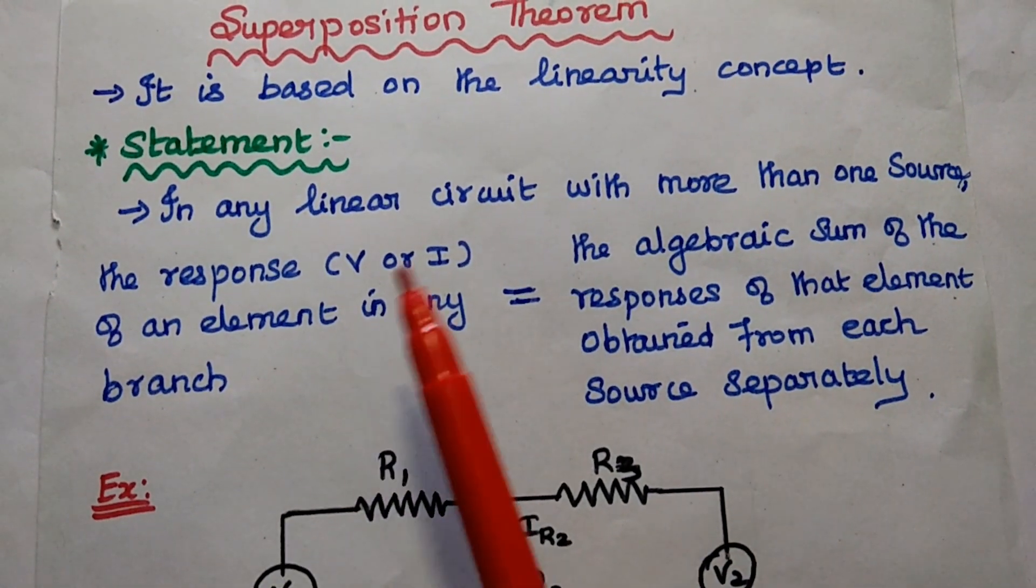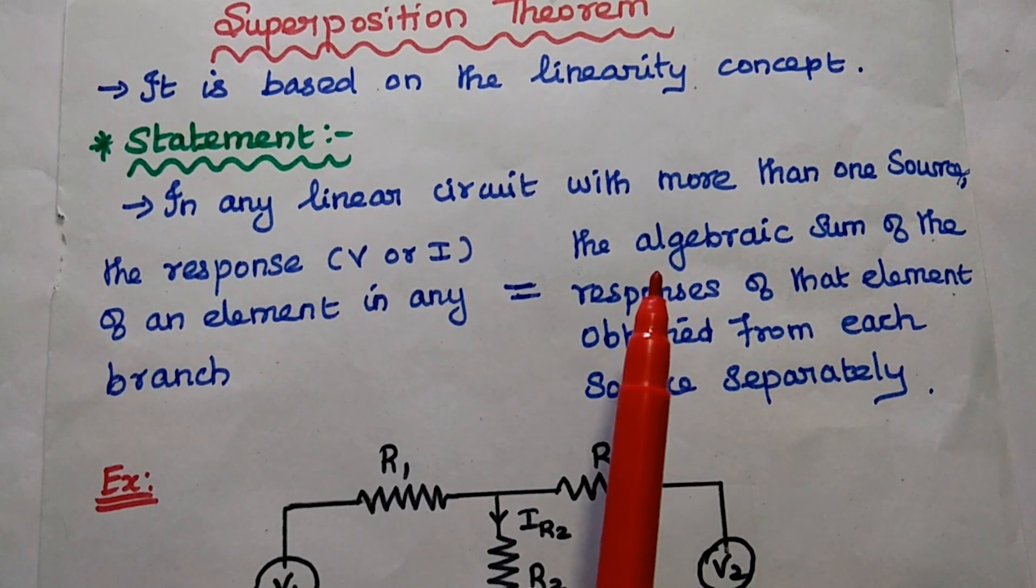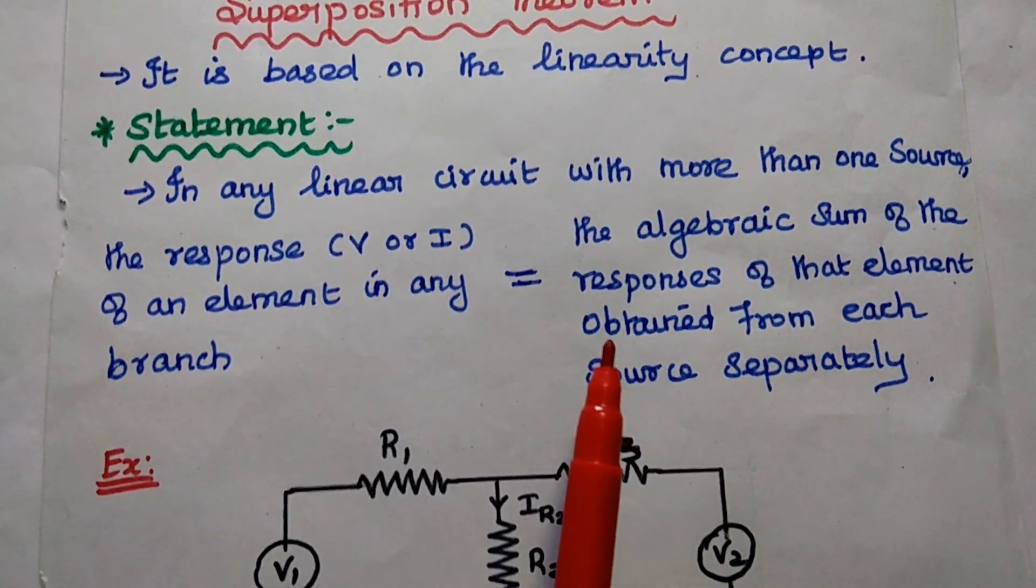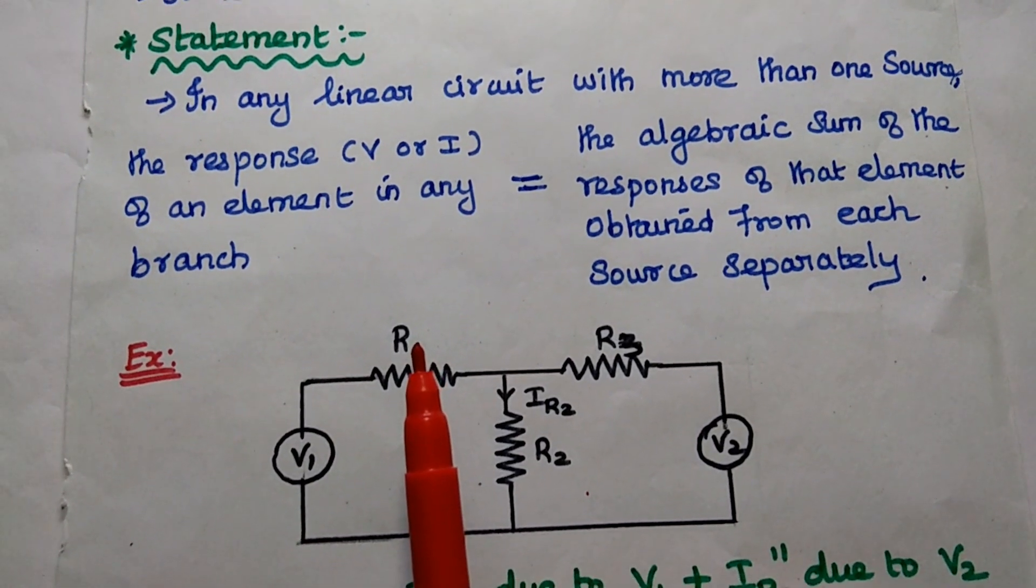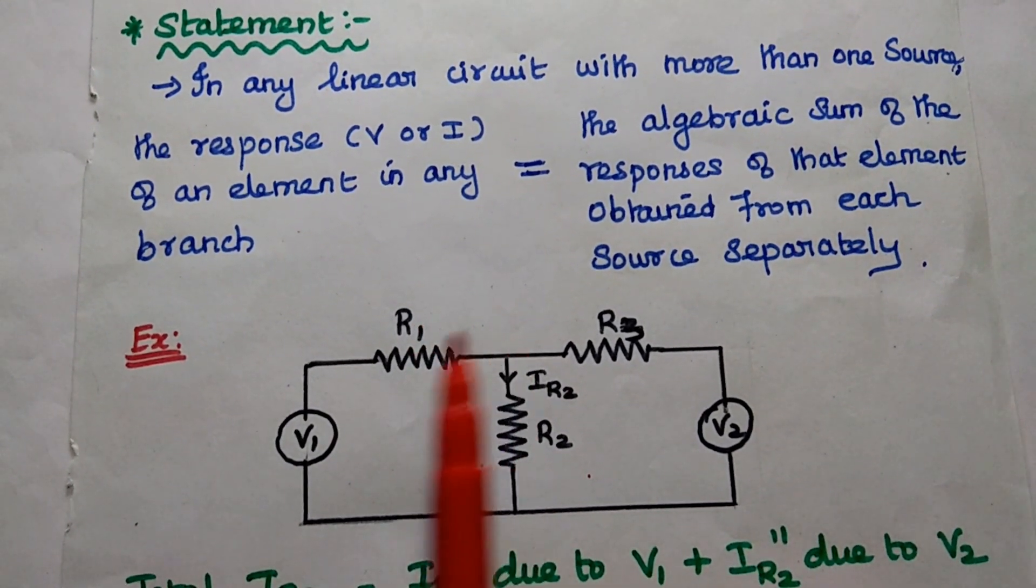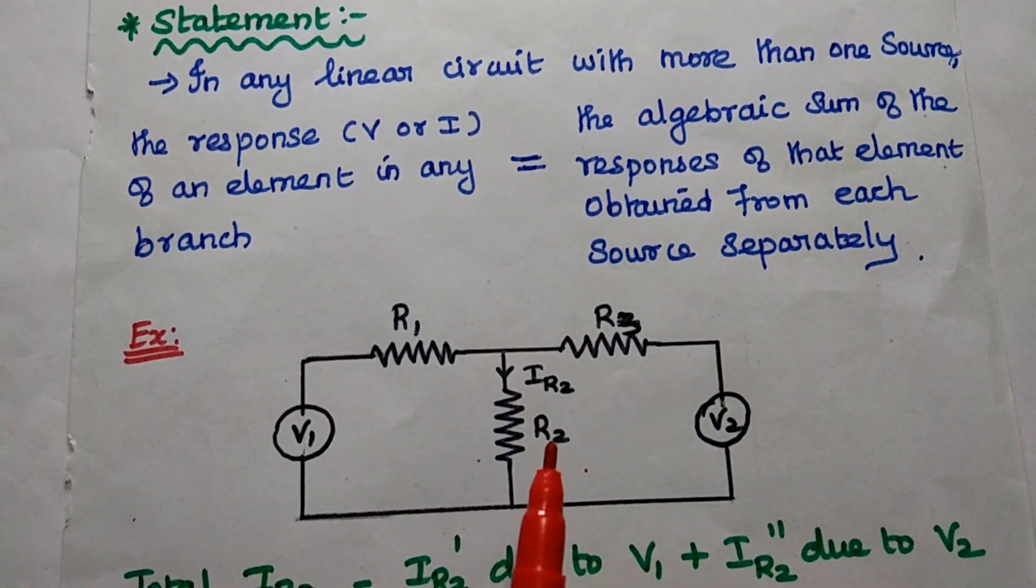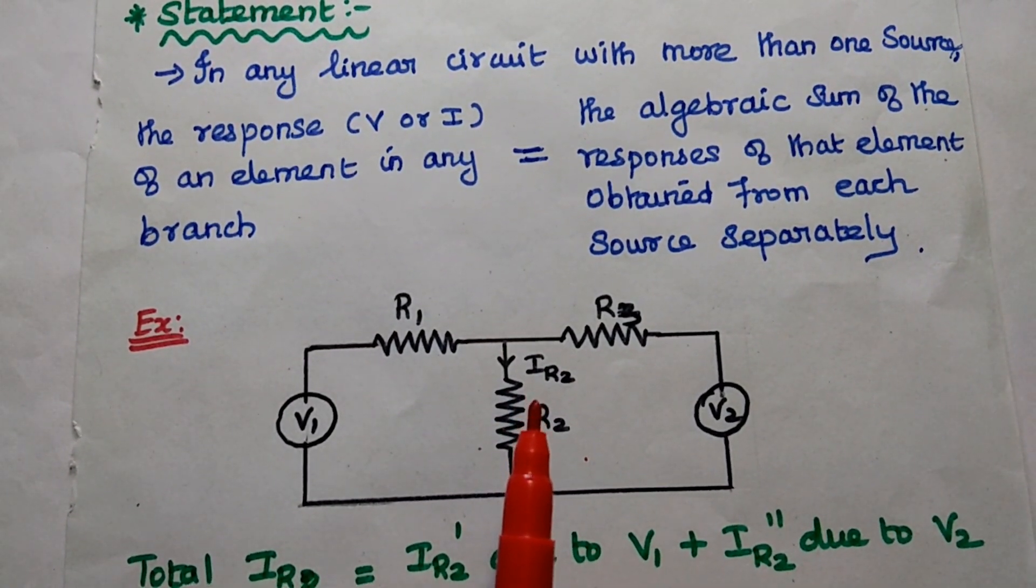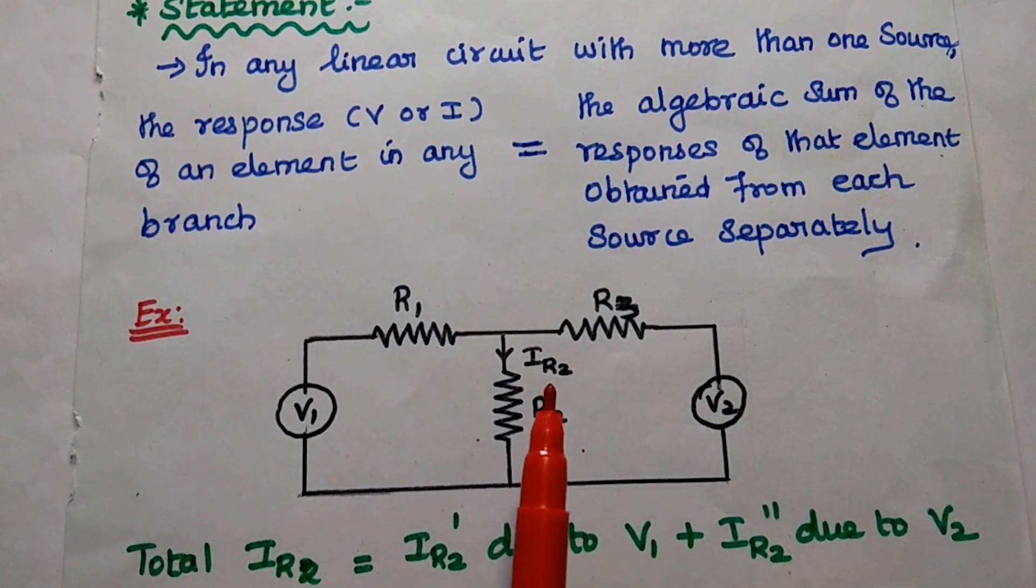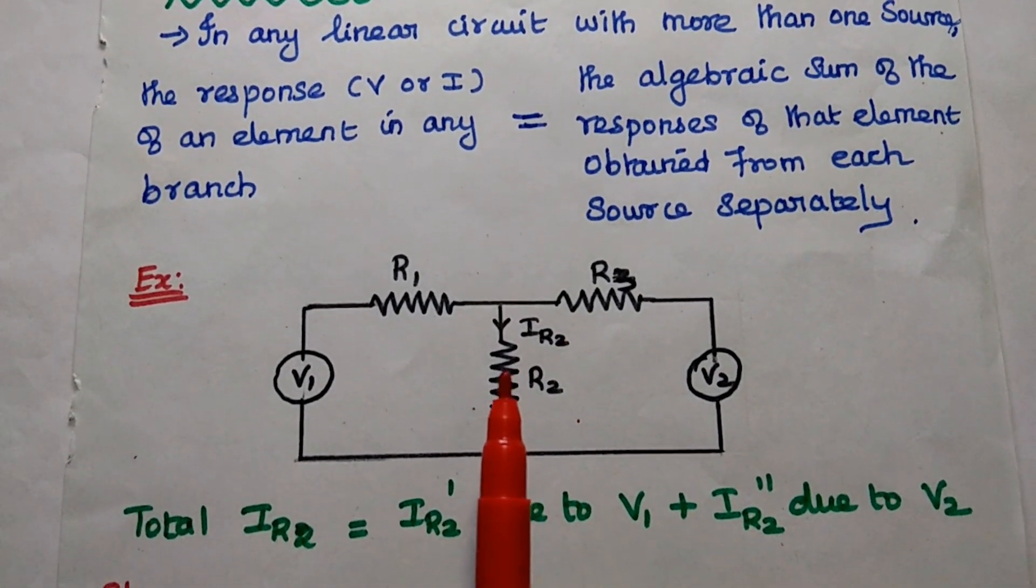So here we can consider a linear circuit with more than one source. In that circuit, the response, either voltage or current, of an element in any branch is equal to the algebraic sum of the responses of that element obtained from each source individually.